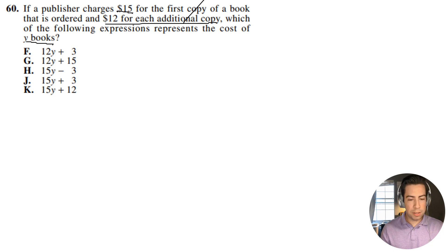Alright guys, so think about it this way. If I bought three books, that means that one costs $15 and the other two cost $12, right? So really what this is going to look like is it's going to be $15 for the first book plus $12 for y books minus one.